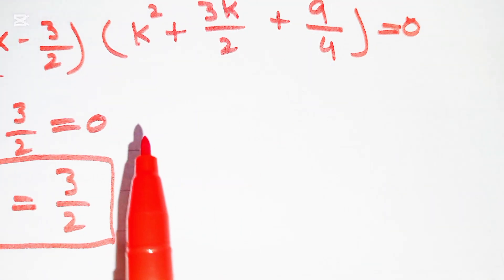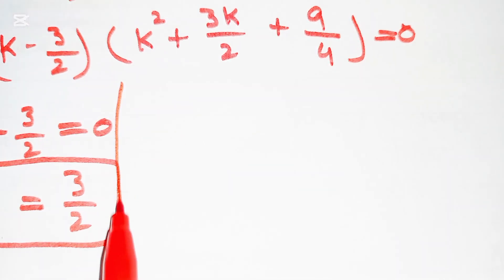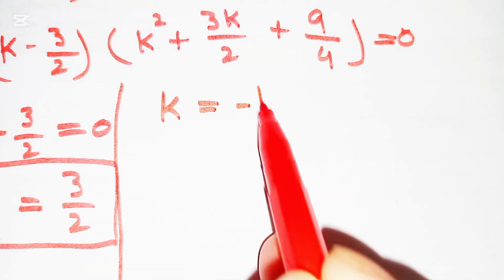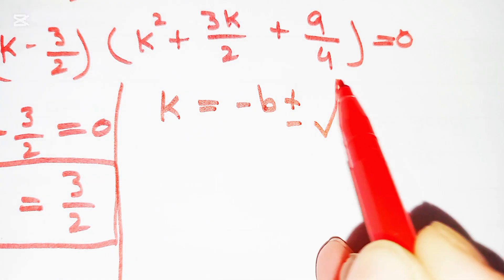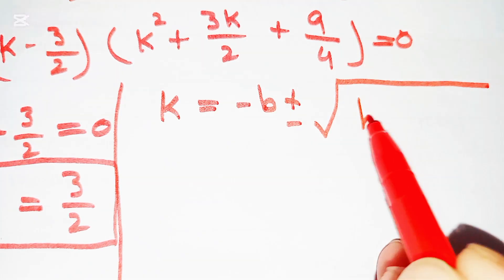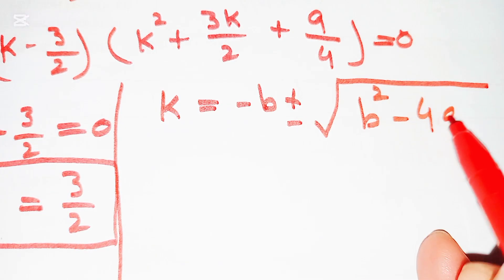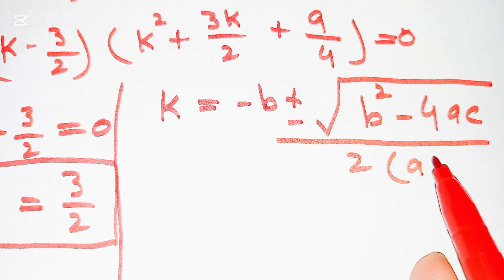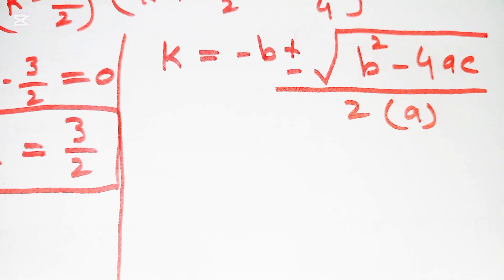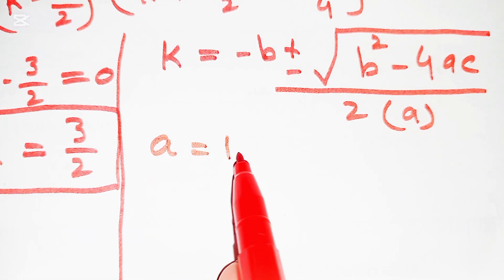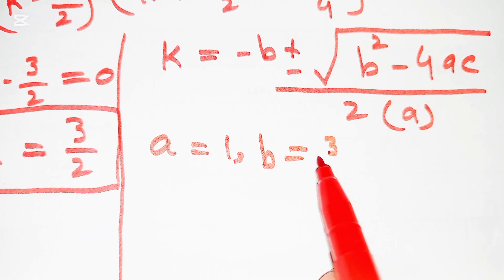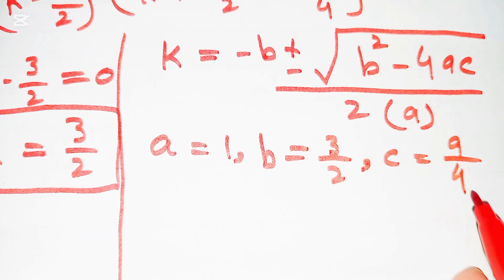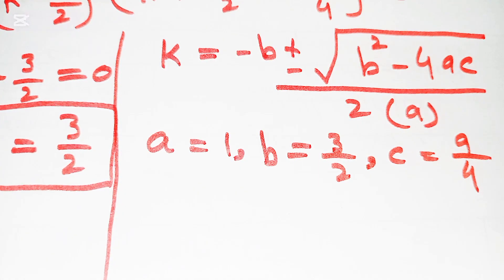The quadratic formula is k = (−b ± √(b² − 4ac)) / 2a. Here a = 1, b = 3/2, and c = 9/4.